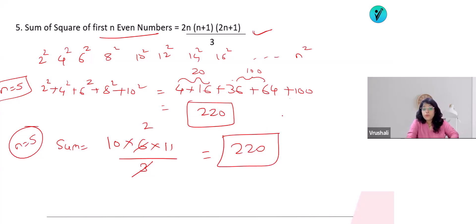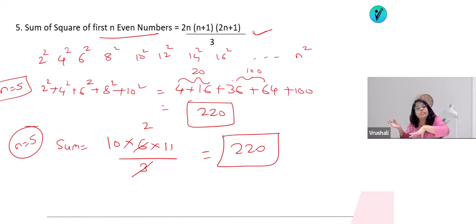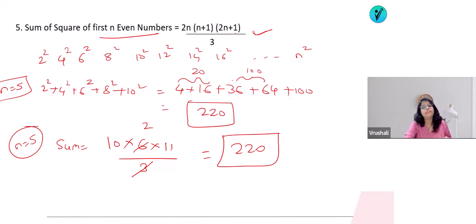You can solve it easily within a few seconds without writing out each squared even number. For first 10 even numbers, simply substitute n=10: 20 × 11 × 21 / 3. That's the formula — much simpler than listing and adding 2², 4², … up to 20².